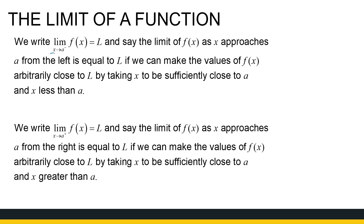We write the following. You see a little negative there. The limit of f of x as x approaches a from the negative side — that's from values less than a — is equal to L. We say the limit of f of x as x approaches a from the left is equal to L if we can make the values of f of x arbitrarily close to L by taking x sufficiently close to a but less than a.